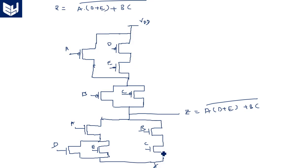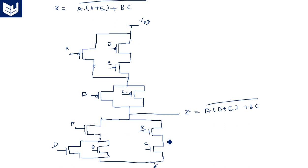In NMOS realization, connected between output and ground: B and C are in series, and this series combination is in parallel with the A·(D+E) combination. Within A·(D+E), since it is a dot product, in PMOS they are parallel but in NMOS they are in series. D and E, which are in series in the PMOS network, are in parallel in the NMOS network. The BC set and the A·(D+E) set are in parallel in NMOS, since they were in series in PMOS.